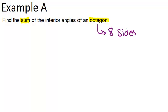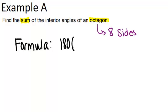In order to do this problem, you need to know the formula for the sum of the interior angles of any polygon. That formula is 180, which is the number of degrees in a triangle, times n minus 2. Because there will always be n minus 2 triangles in any polygon with n sides.